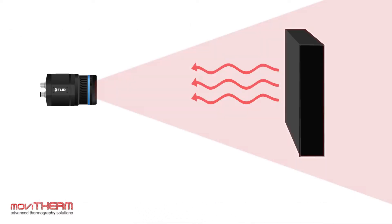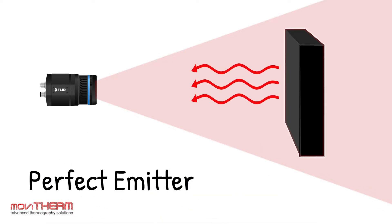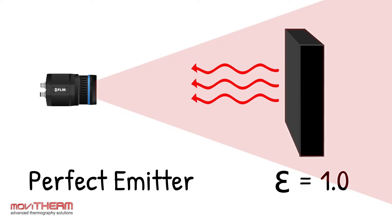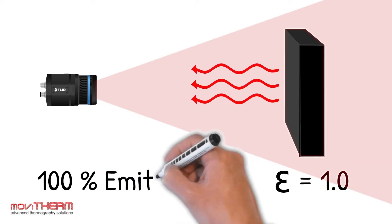A blackbody is a perfect emitter and has an emissivity value of 1. In other words, infrared radiation radiated from the blackbody is 100% emitted.